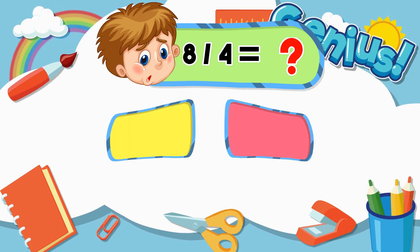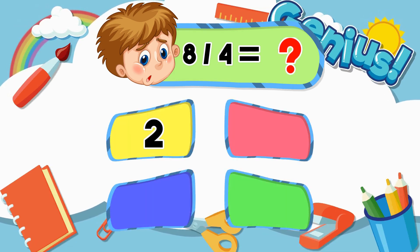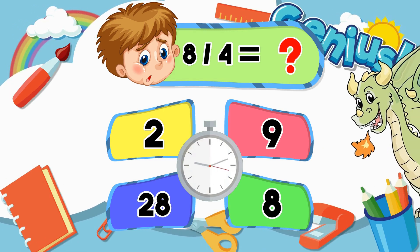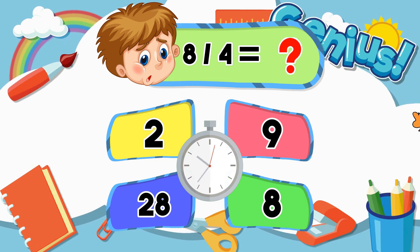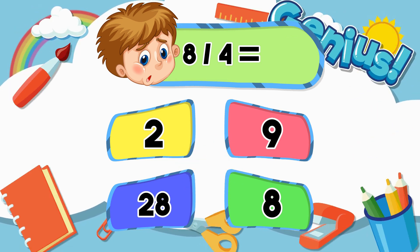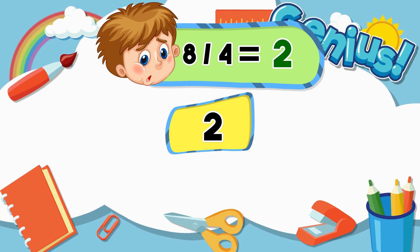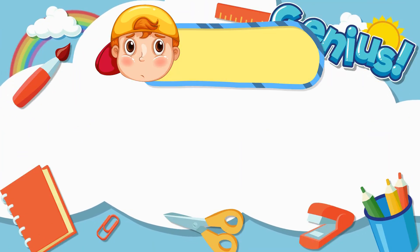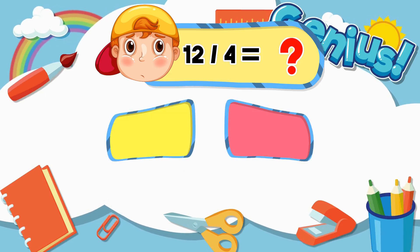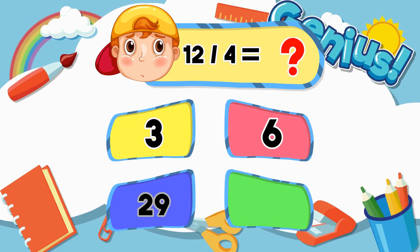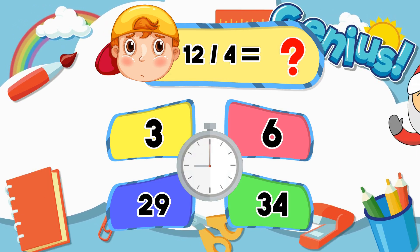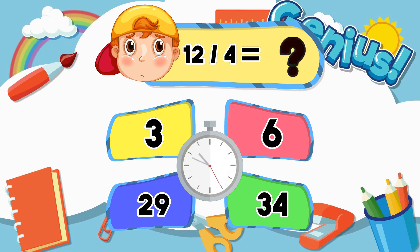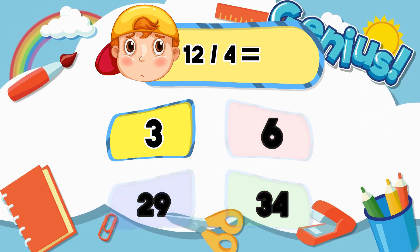What is eight divided by four? Two, nine, twenty-eight. Two. What is twelve divided by four? Three, six, twenty-nine, thirty-four. Three.